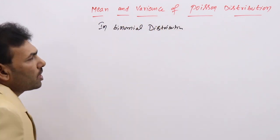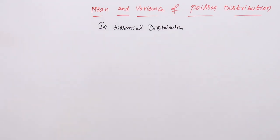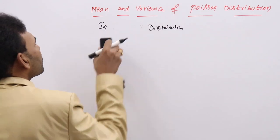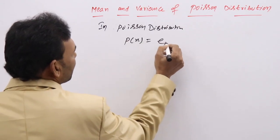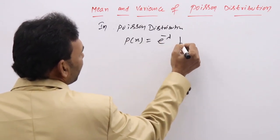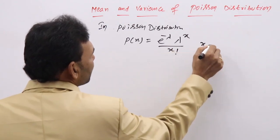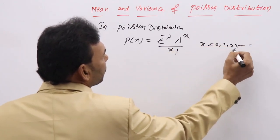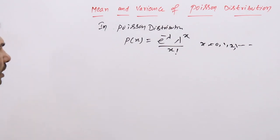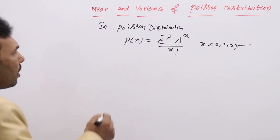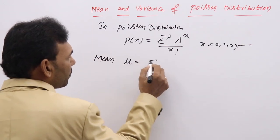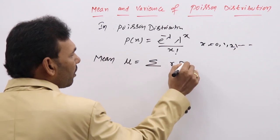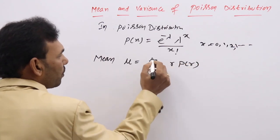In Poisson distribution, P(r) is known. In Poisson, P(x) = e^(−λ) × λ^x / x! for x = 0, 1, 2, 3, and so on. If it is P(r), we write r in place of x. The mean in the discrete case is the standard formula: mu = Σ r × P(r), summed from r = 0 to infinity.